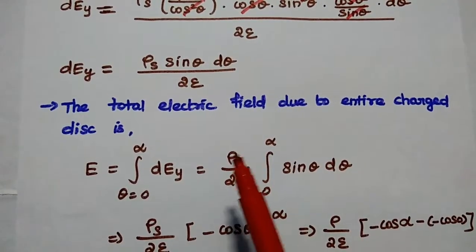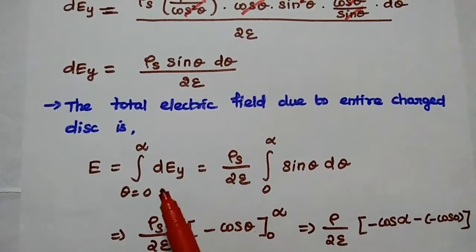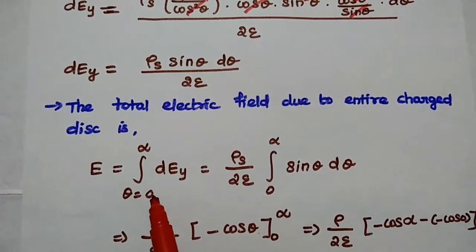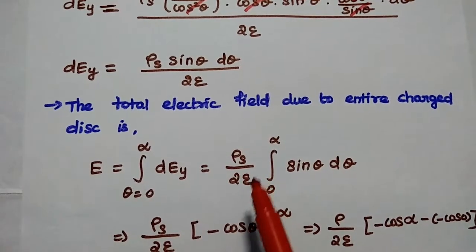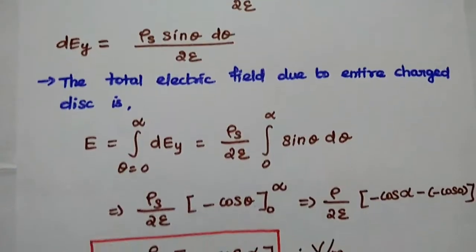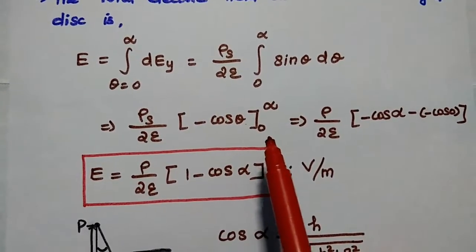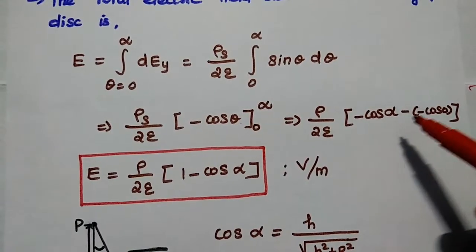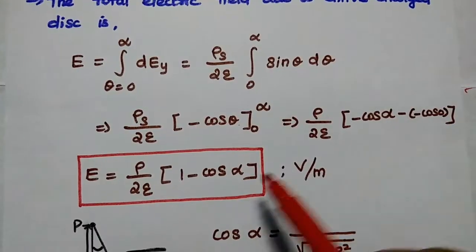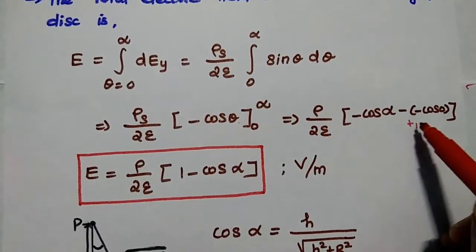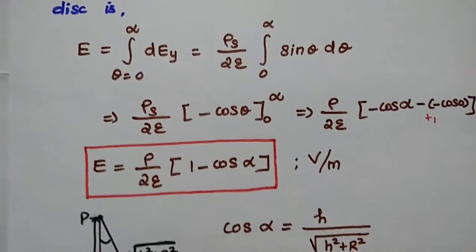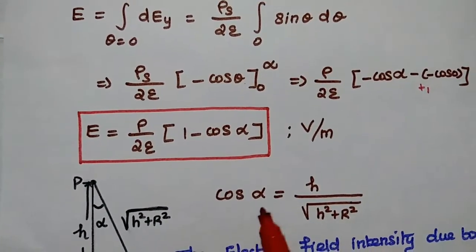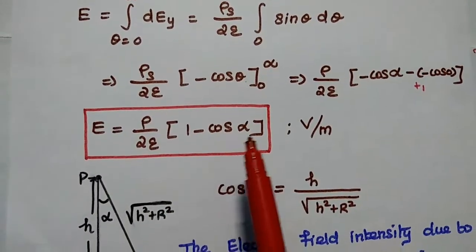To find the total electric field due to the entire charged disk, we integrate this small value. So E equals the integral from theta = 0 to alpha of dEy, which equals rho s / (2·epsilon) times the integral of sin theta · d theta. Integrating sin theta gives minus cos theta. Applying the limits from 0 to alpha: rho s / (2·epsilon) · (minus cos alpha minus minus cos 0). Since cos 0 = 1, this gives E = rho s / (2·epsilon) · (1 minus cos alpha) volts per meter.